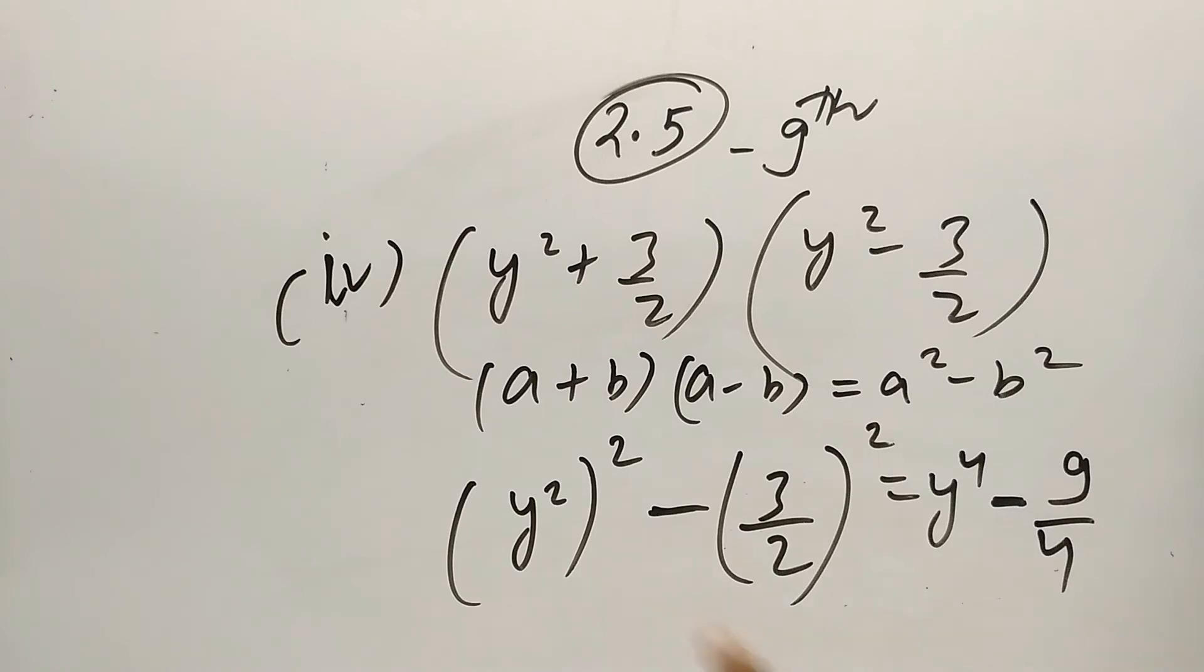So what will be the answer? y⁴ - 9/4. Here we used the identity (a+b)(a-b) = a² - b². I hope you understand this question. Now we will solve the fifth part of the first question.